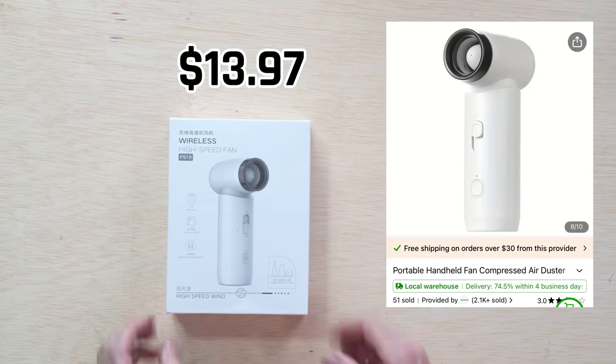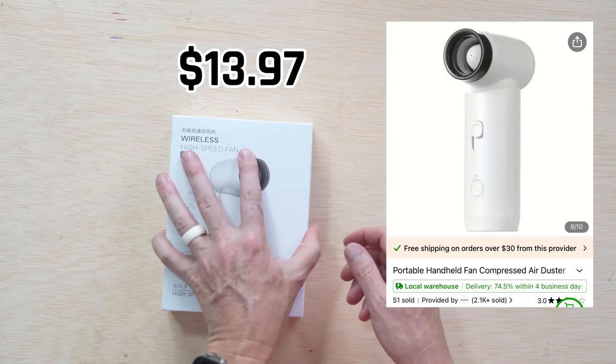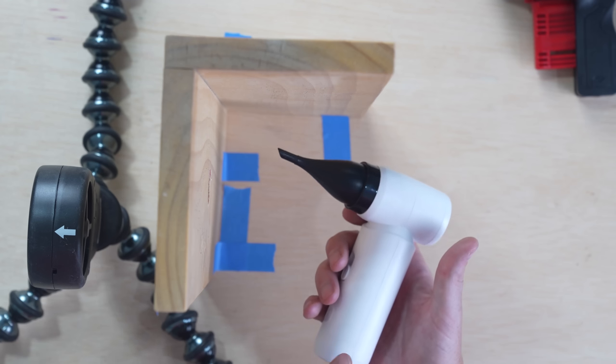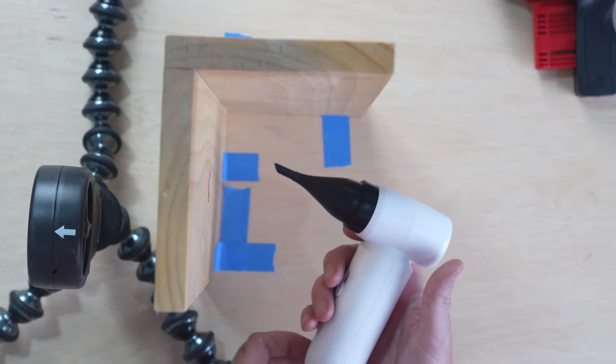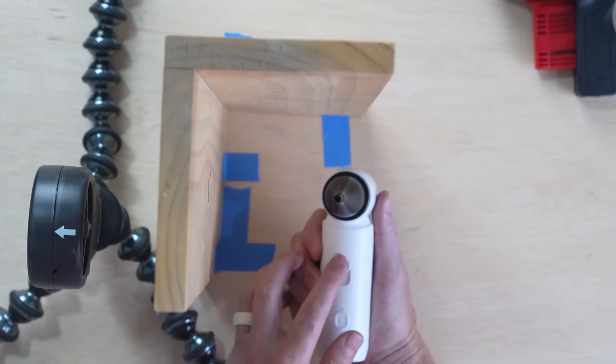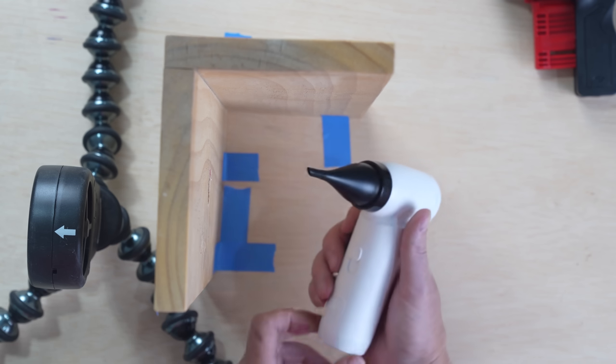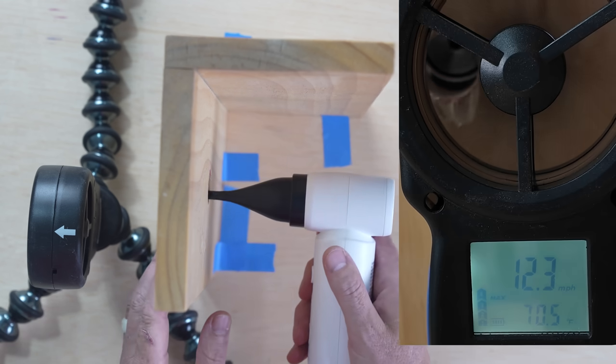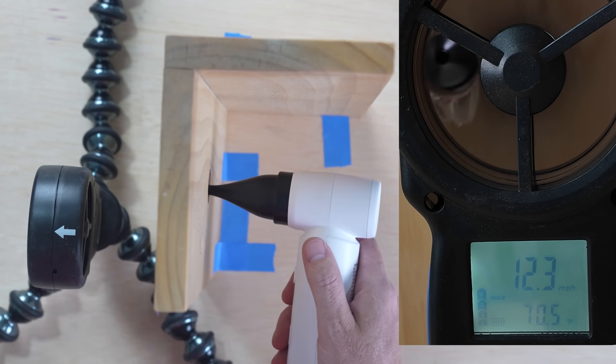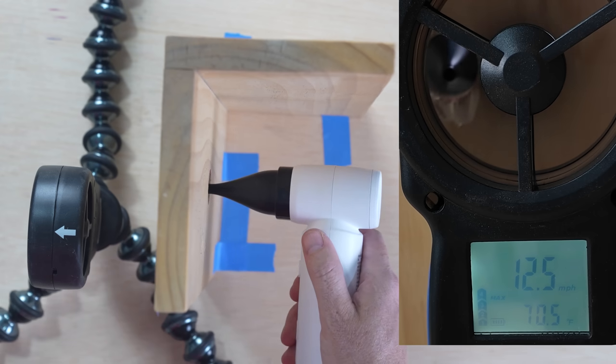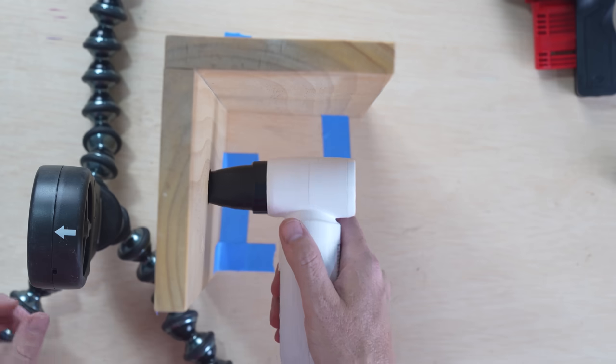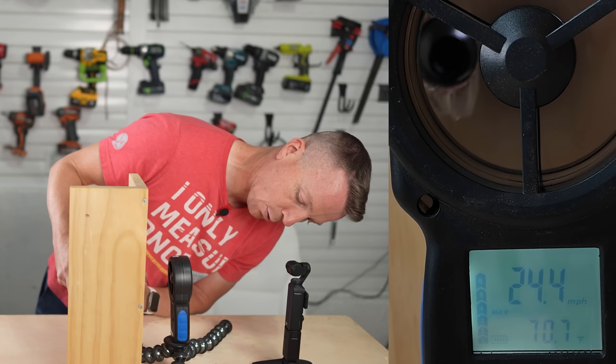Next up at thirteen ninety seven we have the portable handheld fan. This one has a pretty slick design produces a lot of wind speed and it looks really nice especially for thirteen dollars and ninety seven cents. So this one does have a variable speed whereas the other two did not. That's the most I was able to get, twelve point five. I'm going to try it with the other nozzle just to see if that makes any difference. All right so this one we've got twenty four point six.